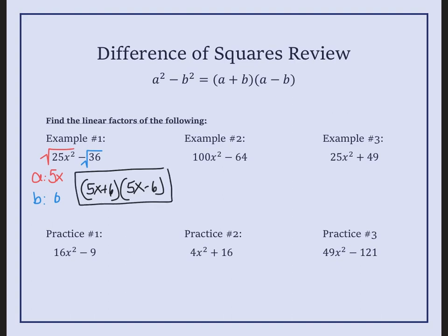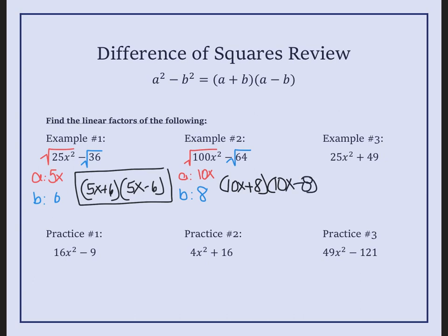We're going to try that again on the second one. We have to check first: is there a subtraction sign, and can I take the square root of both of these? The answer is yes. So I factor it to the sum and the difference. We take the square root of 100x squared, which would be 10x, and the square root of 64 is 8. So you substitute those into a sum and a difference: (10x + 8)(10x − 8). You could always FOIL those, and you would come back to the original term.